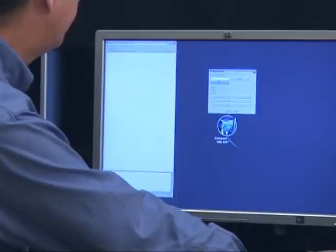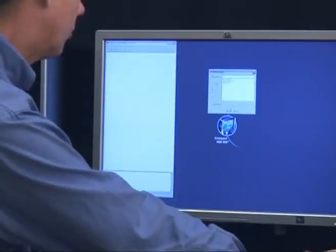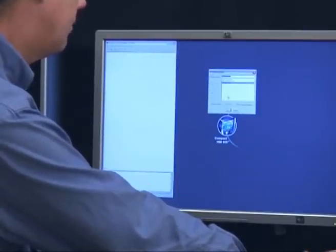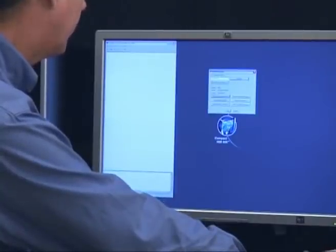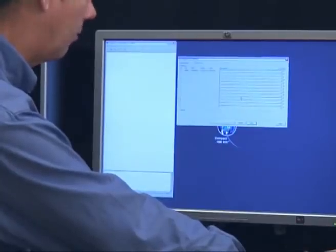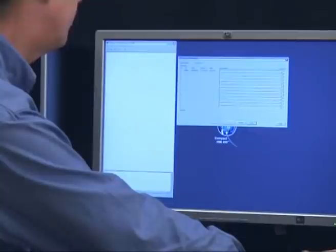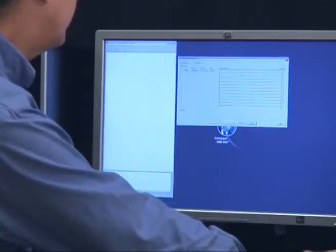Then we get the list of the controllers, and we select the one, the 151 that we just have connected to. Say OK, and then we say we would like to show firmware information. This also gives us the opportunity to actually download firmware. And in this case, we can see that we have the correct firmware in the controller.